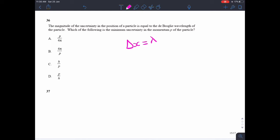So we've got the uncertainty in position is equal to lambda. And we also need to remember that lambda is h over p. We want the minimum uncertainty in the momentum. So the thing that links that is delta x delta p is greater than equal to h over 4 pi.